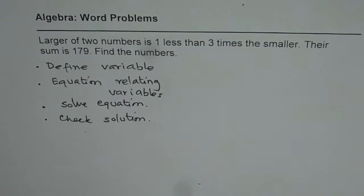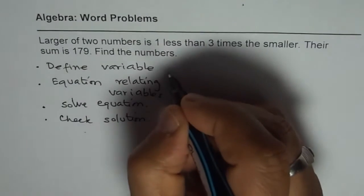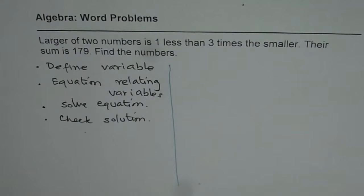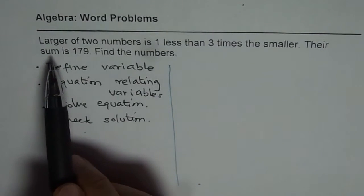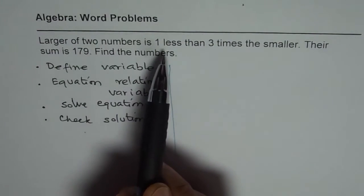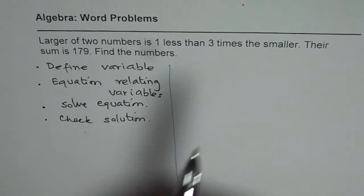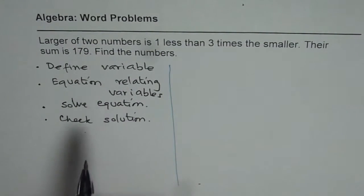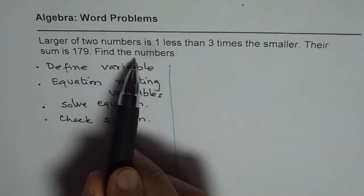With the help of this simple example we will learn this technique. The question here is: larger of two numbers is one less than three times the smaller. Their sum is 179, find the numbers.